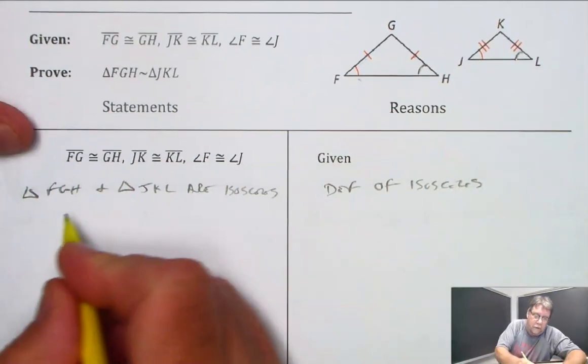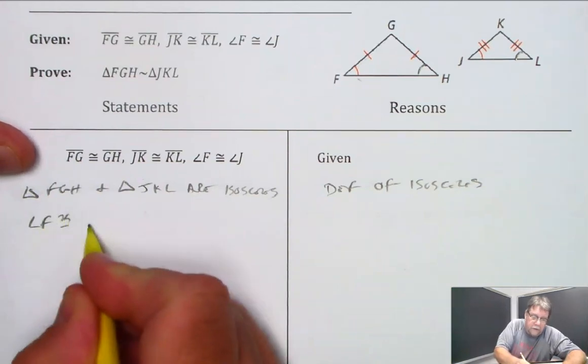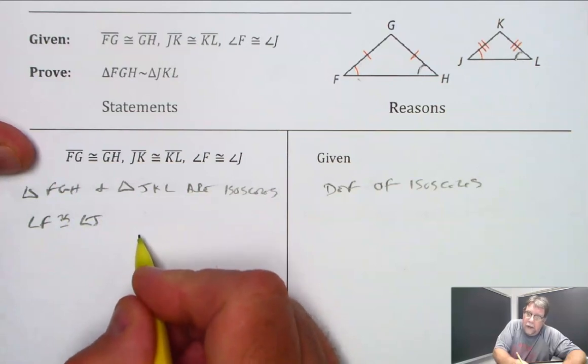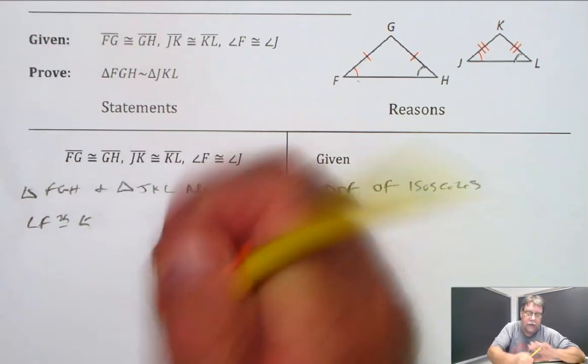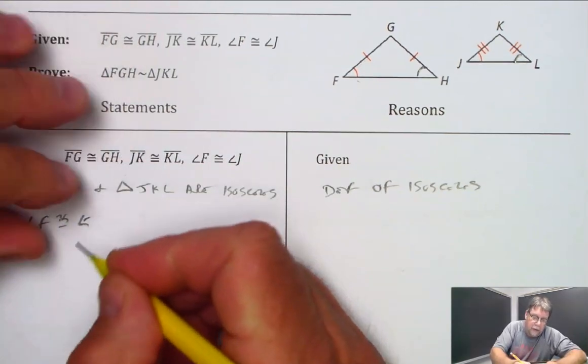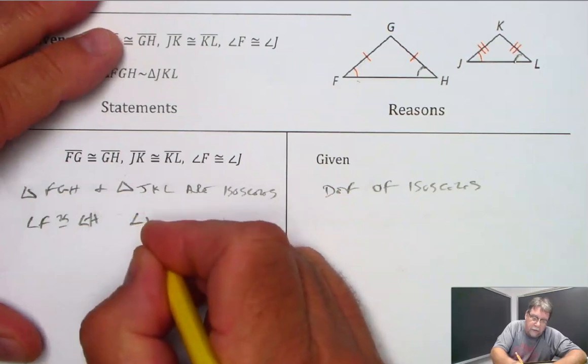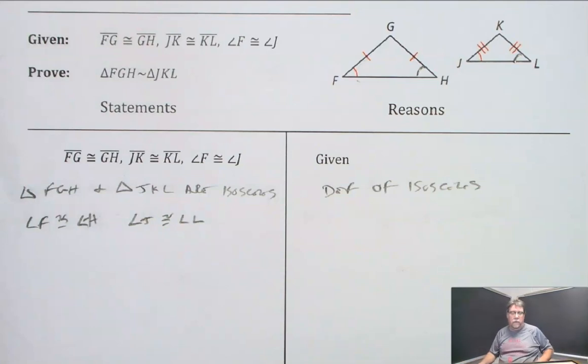So angle F is congruent to angle H, and angle J is congruent to angle L.